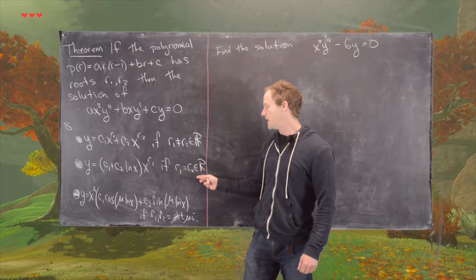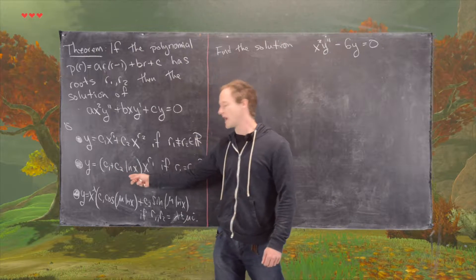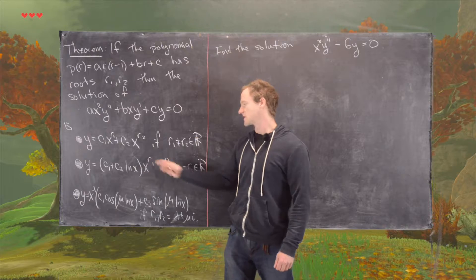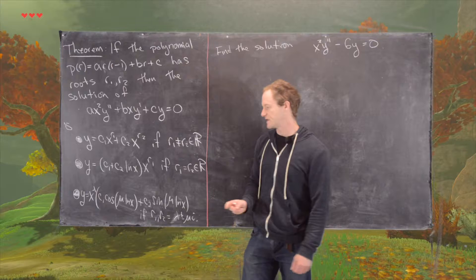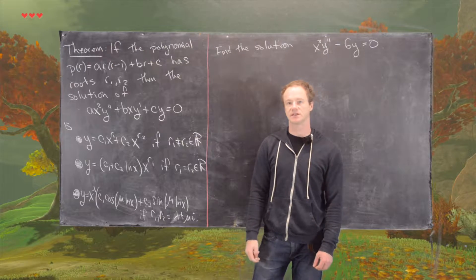If you have repeated real roots, then you have c1 plus c2 natural log of x times x to the r1. And if you have complex conjugate roots, then you get this solution down here that includes sines and cosines.